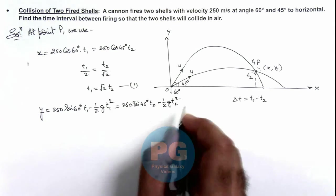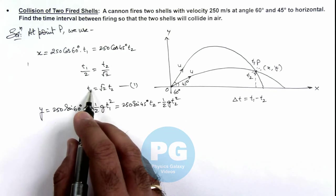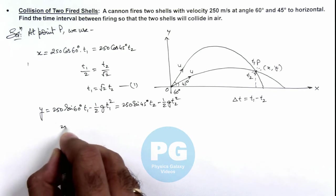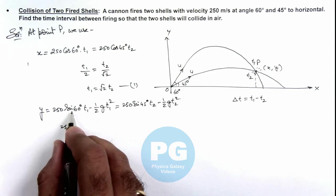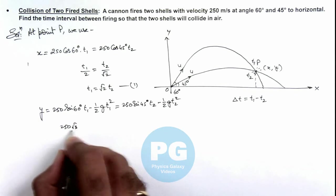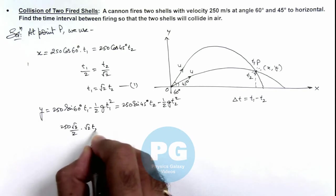Now we can substitute the value of t₁ as √2 t₂, so this will be 250/√2 t₂ minus ½g. Here sin 60° can be written as √3/2, multiplied by t₁ we can write as √2 t₂ minus